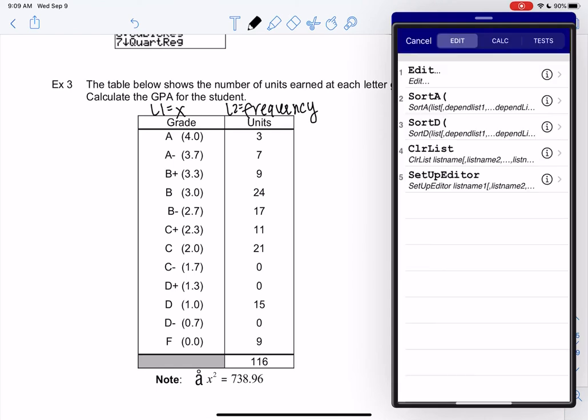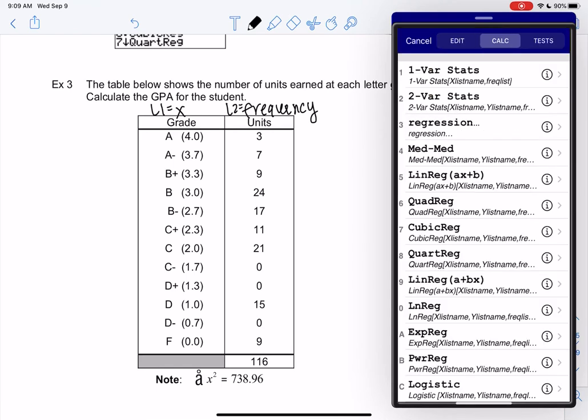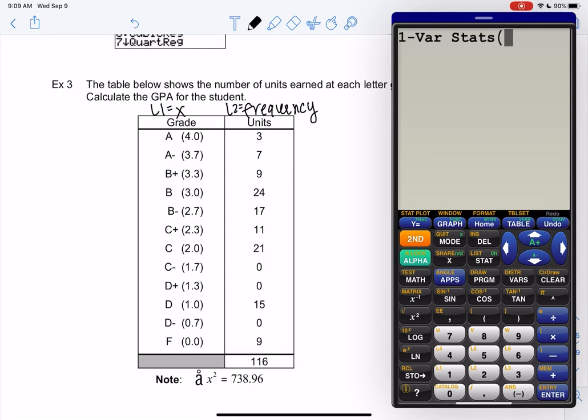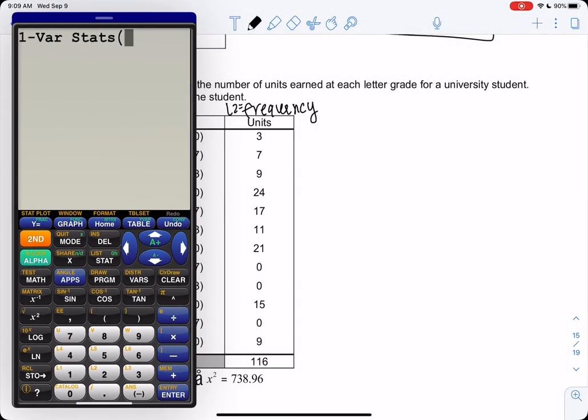And then once you have it all entered, we're going to go to our new favorite menu: STAT, 1-Var Stats. And you have to tell it to look at L2 or it will not look at it. So it doesn't know you want it to look at it unless you tell it. So not all the calculators have parentheses, so mine does, but they don't all have parentheses.